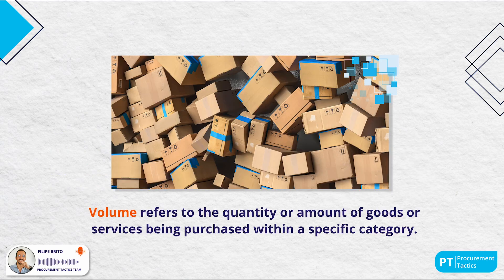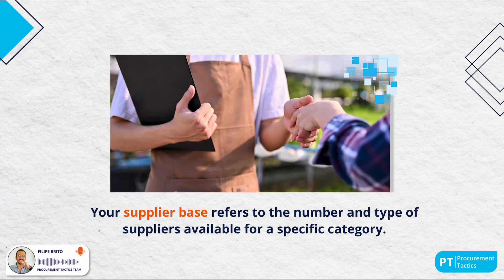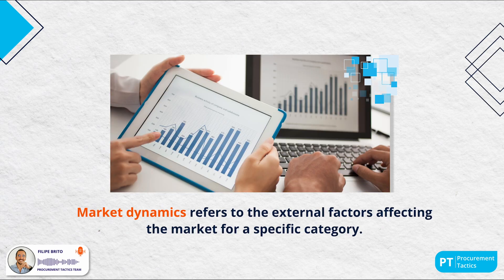Volume refers to the quantity of goods or services purchased within a specific category. The supplier base refers to the number and type of suppliers available, helping you understand why you rely on certain suppliers and how strategies impact supplier management. Market dynamics refers to external factors like supply and demand trends, competition, price fluctuations and regulatory changes that affect the market for a specific category.